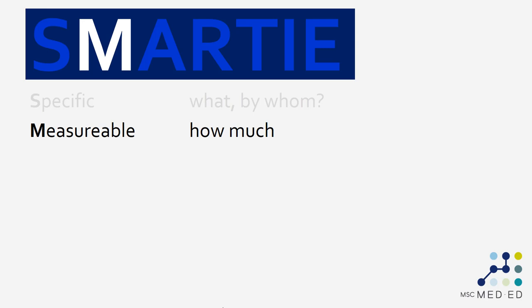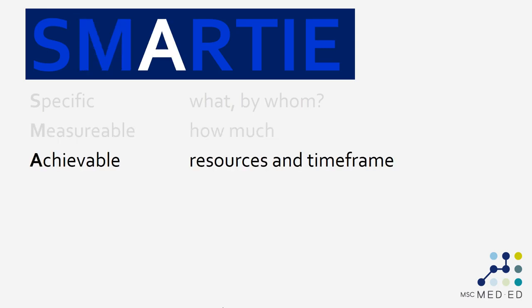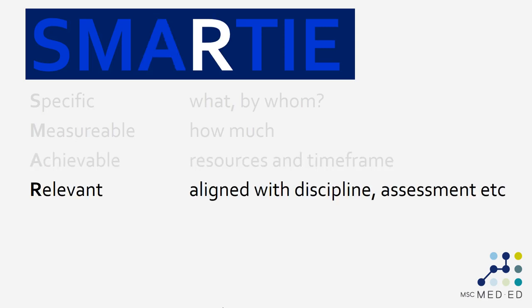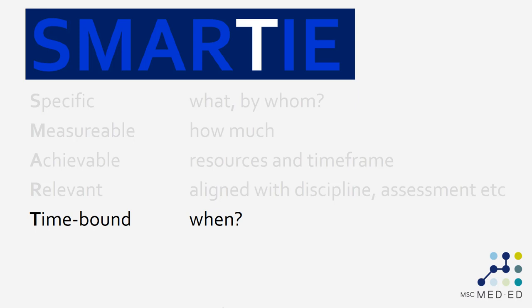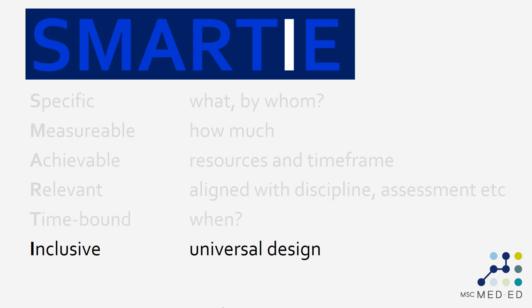The A is achievable — can the learners achieve this learning outcome, given the resources available to them and the time that you've made available for them to do it? The R is relevant — is the learning outcome aligned with the discipline for the students, and is it aligned with the assessment that you want to measure the learning outcome by? The T asks: is the learning outcome time-bound — does it specifically say by when you want the learning to be achieved? The I stands for inclusive. If you apply the principles of universal design to the writing of your learning outcome and the activities that flow from it, then you're going to be in good shape.